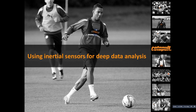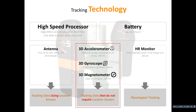Welcome to the November webinar titled 'Using Inertial Sensors for Deep Data Analysis.' When we're talking about inertial sensors, we're talking about things the device can capture without the need of satellites or GPS — things like accelerometers, which measure proper acceleration and force; gyroscopes, which measure rotation speed; and magnetometers, which act as a digital compass. That's what we're talking about when using inertial sensors to analyze data.